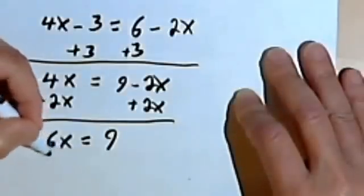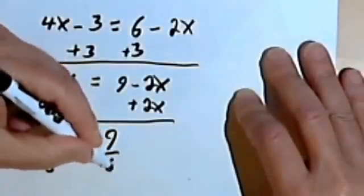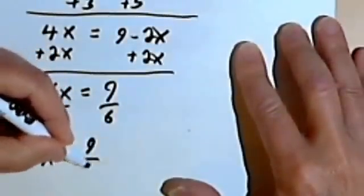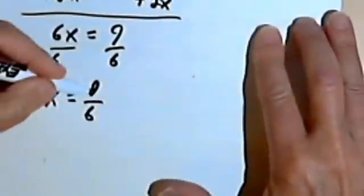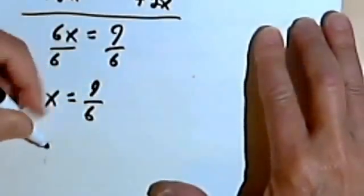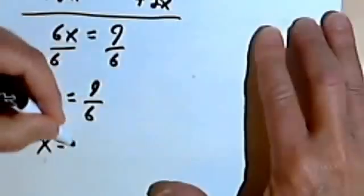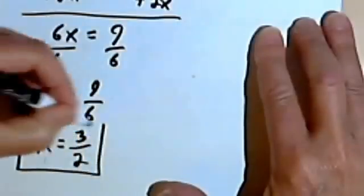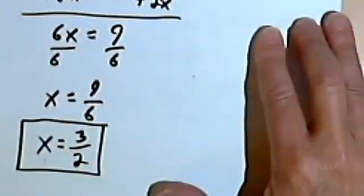And now all I have to do is divide both sides by 6. So I've got x equals 9 over 6. And of course I can reduce 9 over 6. Both of these numbers can be divided by 3. So 9 divided by 3 is 3. 6 divided by 3 is 2. So my answer is going to be x equals 3 halves.